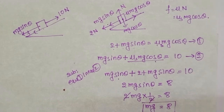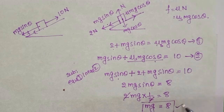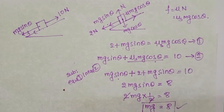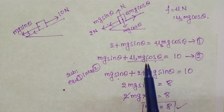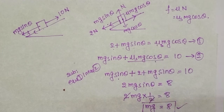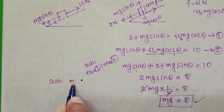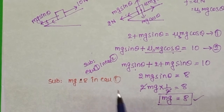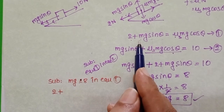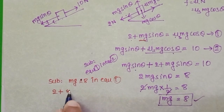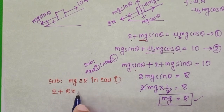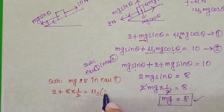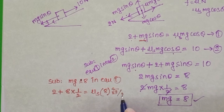We need to find the coefficient of static friction. Now that we know mg = 8, substitute this value into Equation 1: 2 + mg sin30° = μs × mg cos30°. Substituting: 2 + 8 × (1/2) = μs × 8 × (√3/2).